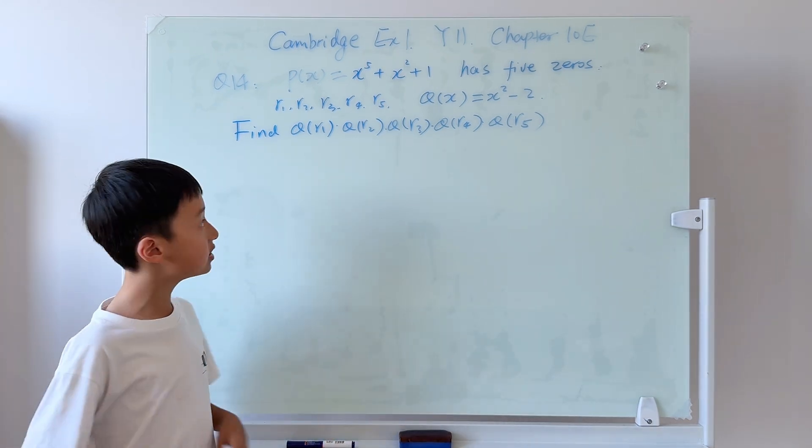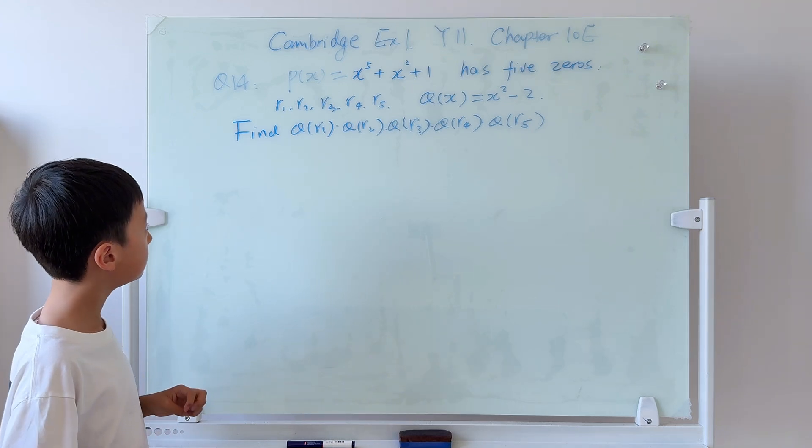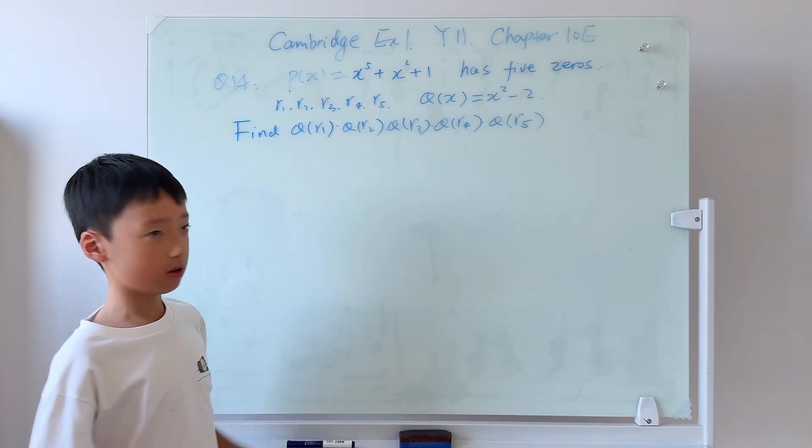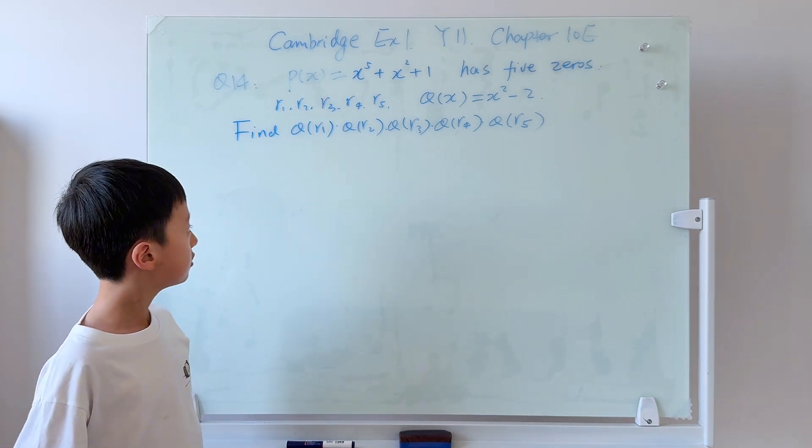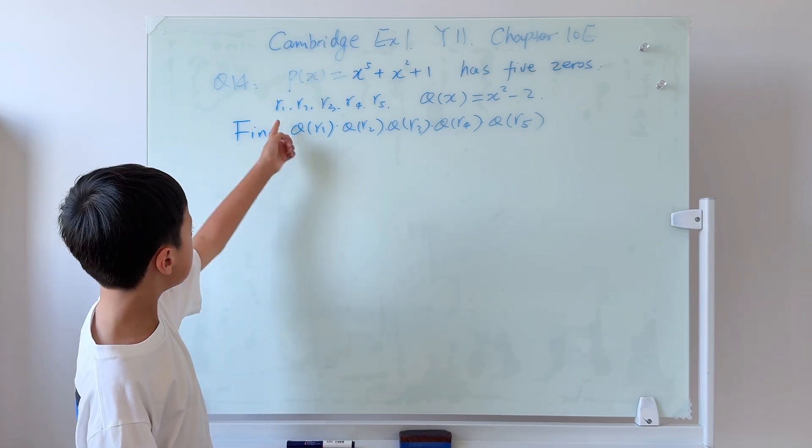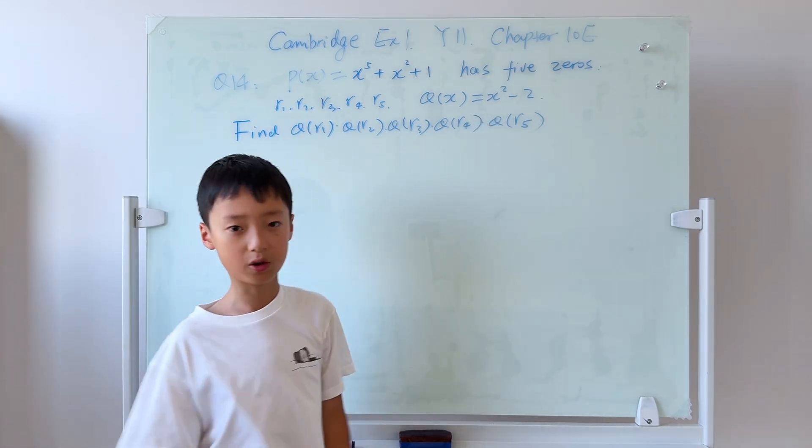Now how do we start solving this problem? This polynomial has five zeros r1 to r5. So if we want to figure this out, why don't we just substitute these five roots into this polynomial?